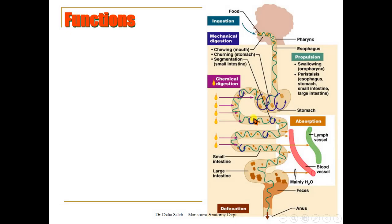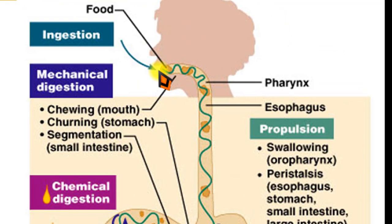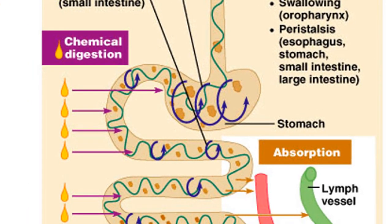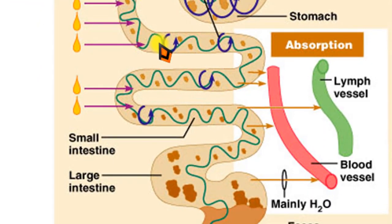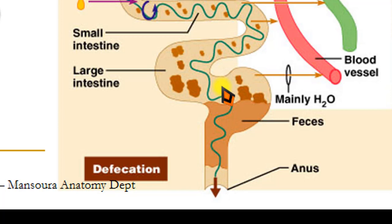This diagram summarizes the overall function of the GIT. First, we ingest food through the mouth, where mechanical and chemical digestion begins. Then absorption of food takes place. The undigested food moves into the large intestine, where water is reabsorbed and fecal materials are formed. Finally, excretion or defecation takes place through the rectum and anal canal.